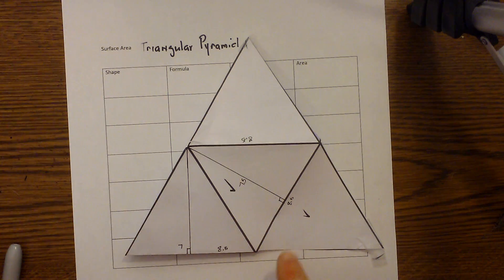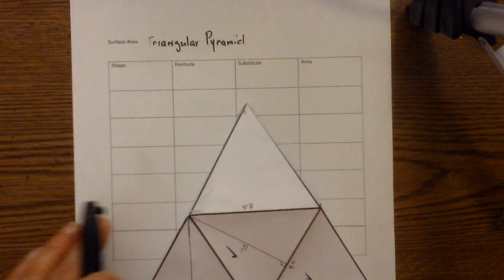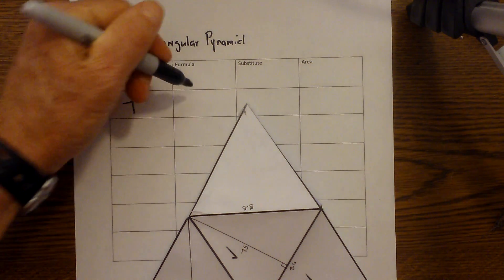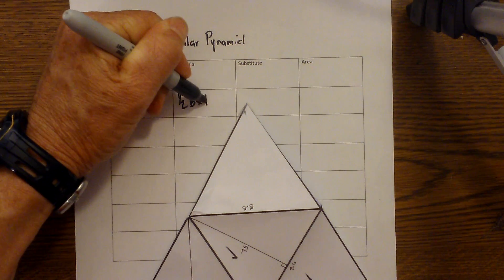So let's just start plugging in our numbers and use our grid to organize it. First, the shape is a triangle. The formula is one half base times height.